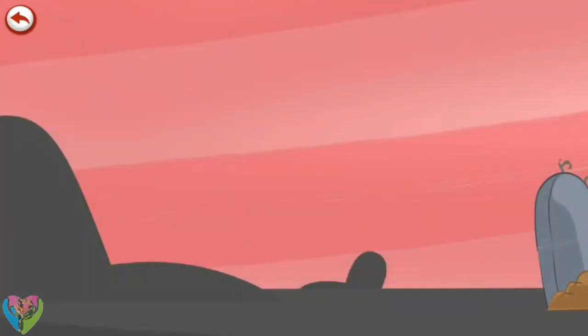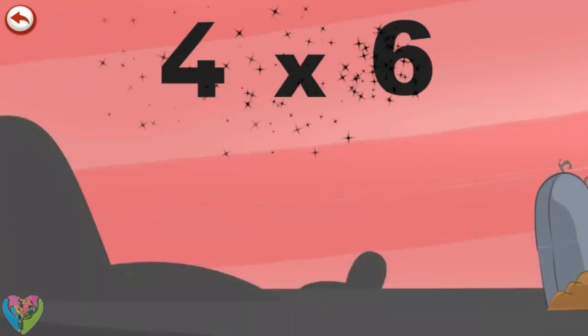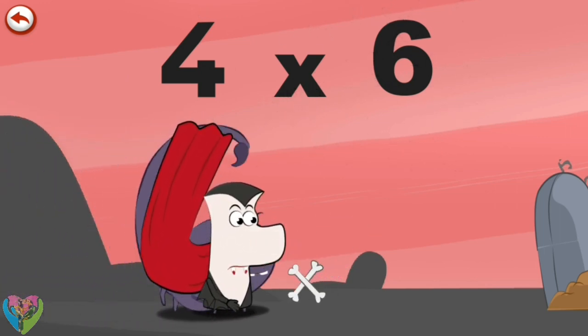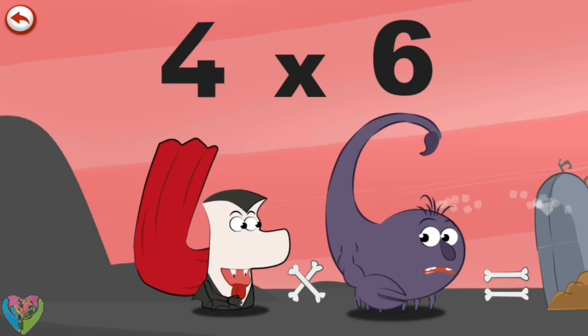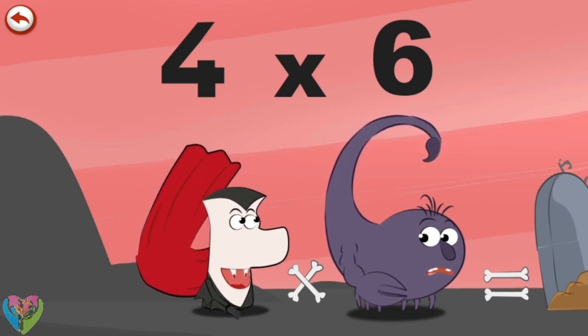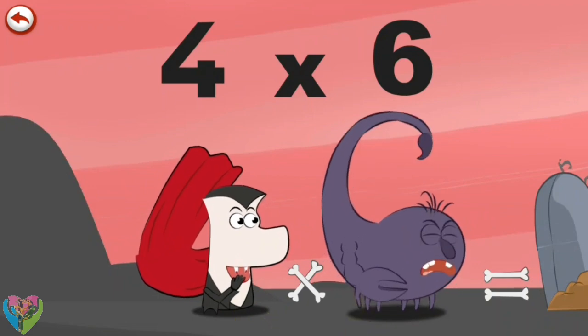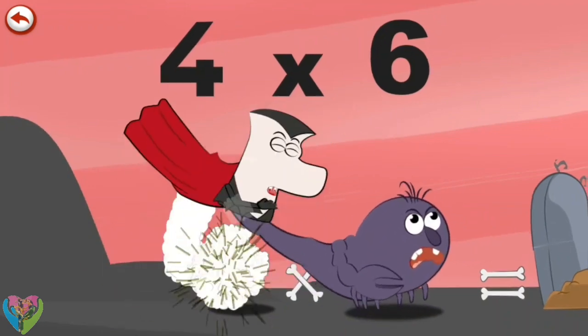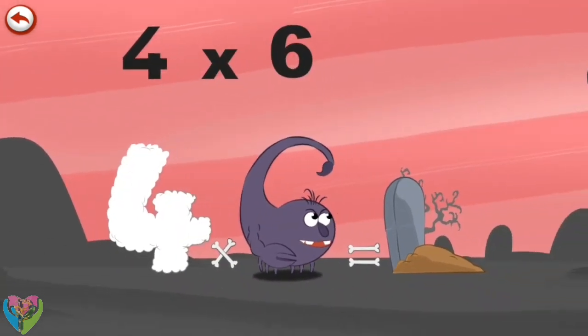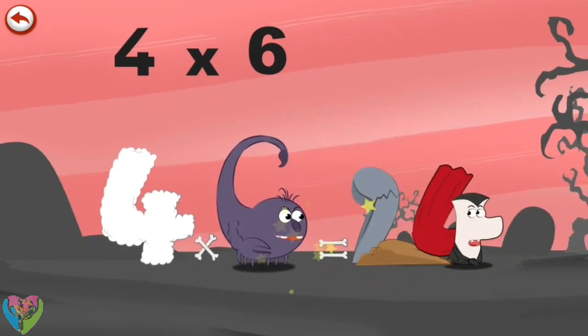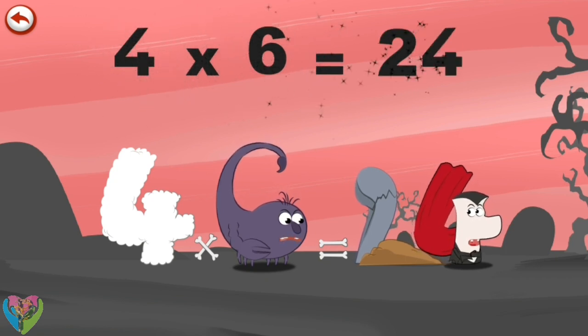What's the story of 4 times 6? When Vamp 4 sees Scorp 6's tasty tail, he can't help taking a bite out of it. Curiously, Scorp 6 hits him with his tail. The Vamp 4 flies through the air and lands on a tombstone, which he breaks in the shape of a 2. 4 times 6 is 24.